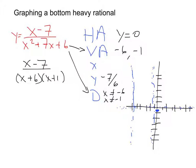And my x-intercept comes from setting my numerator equal to 0. So when I set my numerator equal to 0, I'm going to get positive 7. So this is going to be at 7. So on my graph, 1, 2, 3, 4, 5, 6, 7.